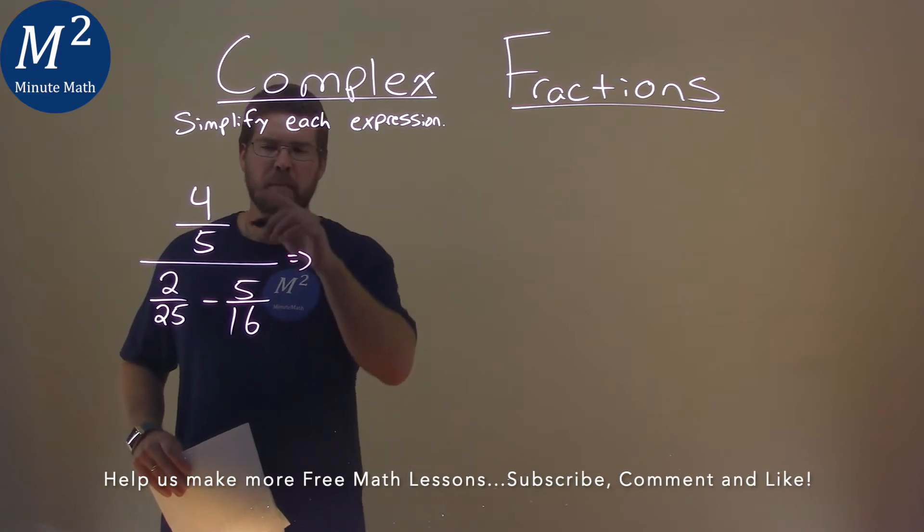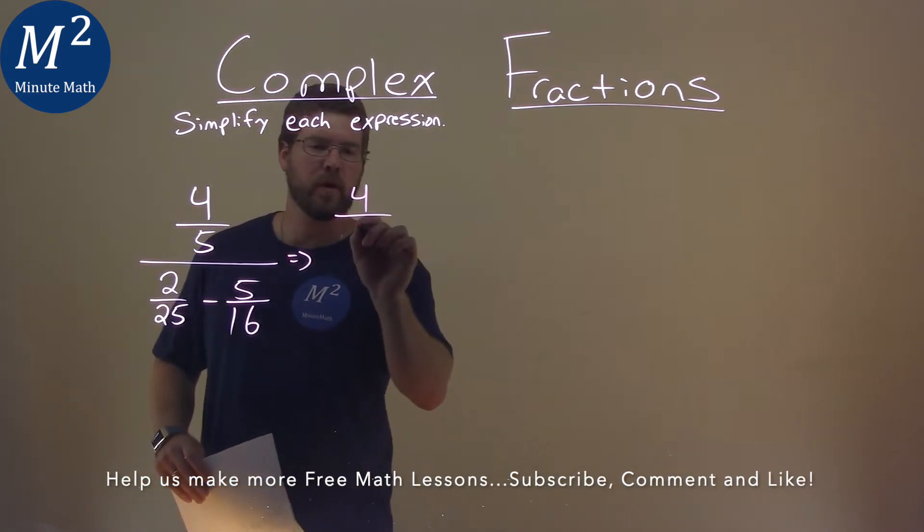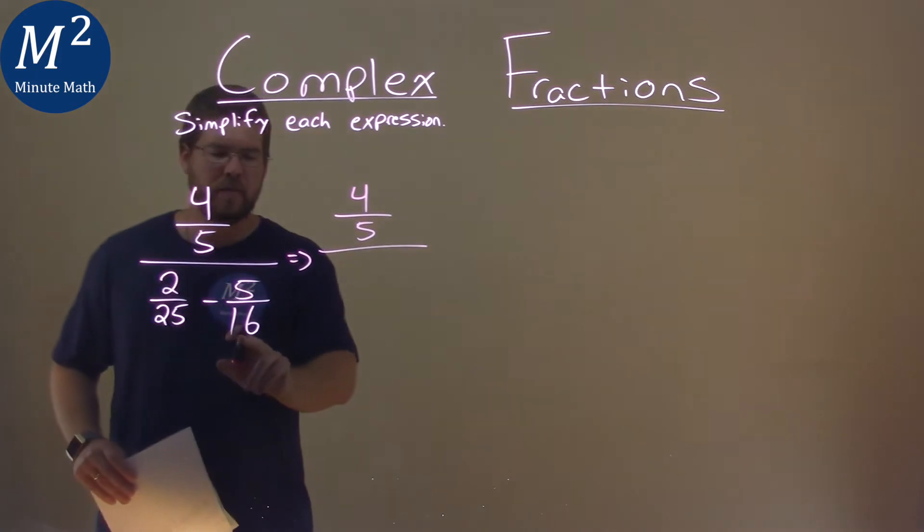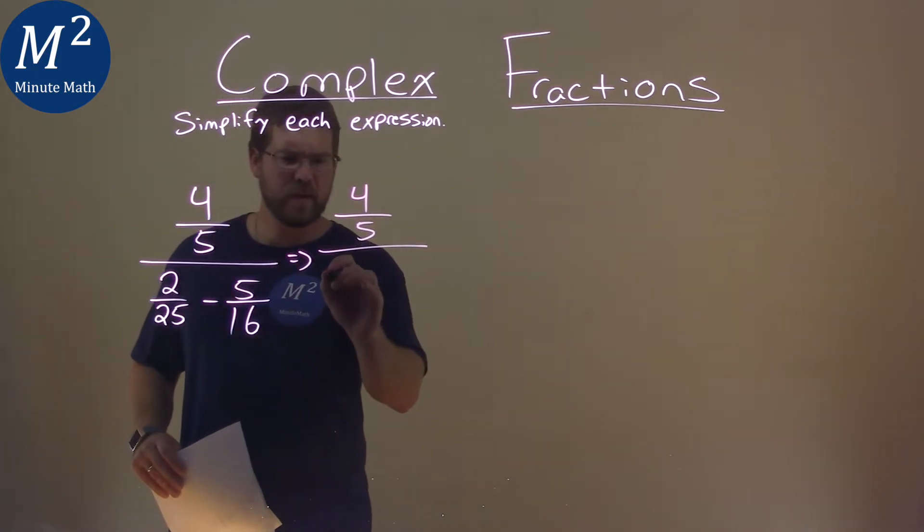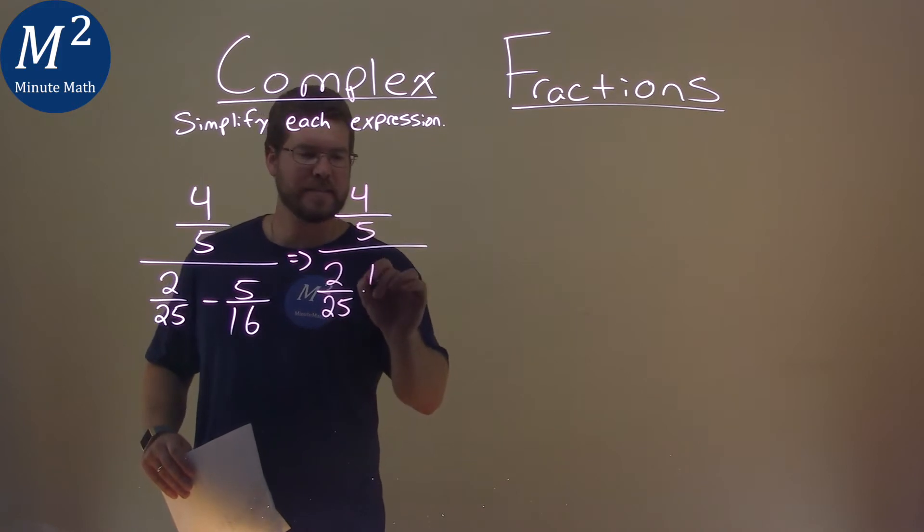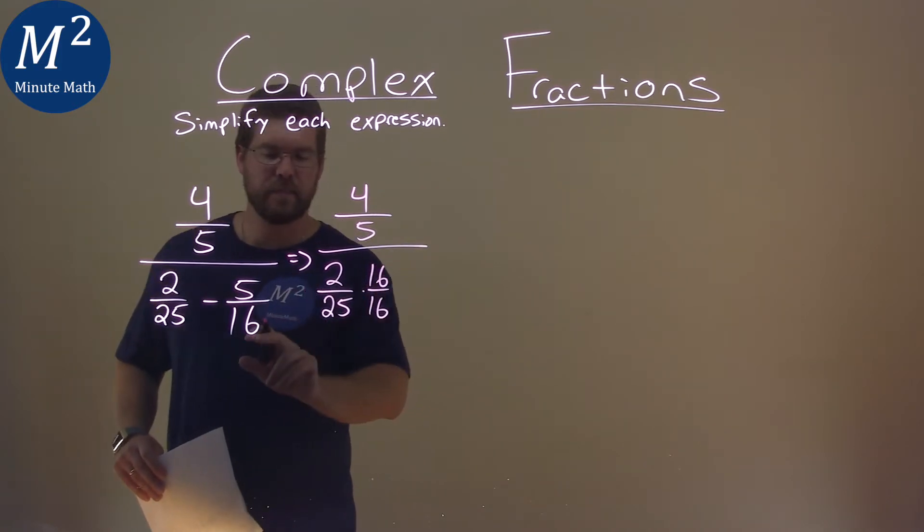Well, first thing is, I'm going to leave that 4 fifths in the numerator, the big numerator. The denominator, I want to have a common denominator. So an easy way to do that is I take my 2 over 25 and multiply that by a 16 over 16, that denominator.